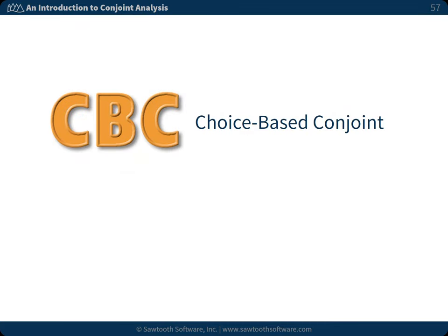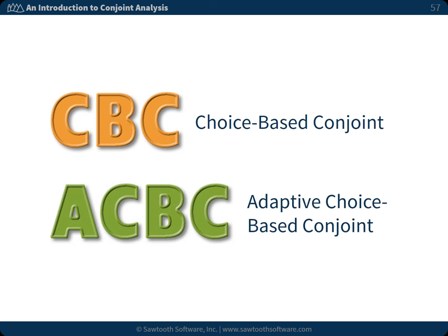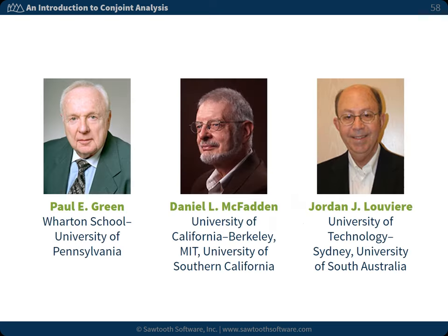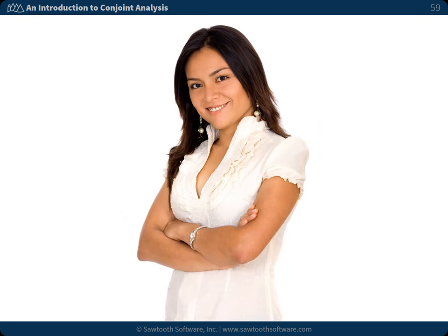There are different approaches for conducting conjoint analysis. Nowadays, the most popular is choice-based conjoint, or CBC, which some people call discrete choice. Another variant is adaptive choice-based conjoint, or ACBC, which is a recent adaptive variation on the popular CBC method. Here are three key luminaries who have contributed to the development of conjoint analysis, or its close relative discrete choice analysis, dating back to the 1970s. Of course, there's always room for more. We invite you to continue your study of conjoint analysis — one day, perhaps your contributions will take this exciting field to even greater heights.